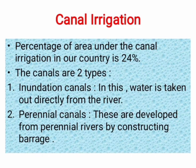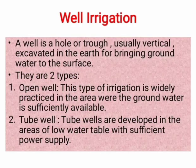Well irrigation: a well is a hole, usually vertical type, excavated in the earth for bringing groundwater to the surface. Well irrigation is also divided into two categories: one is open wells and another one is tube wells.